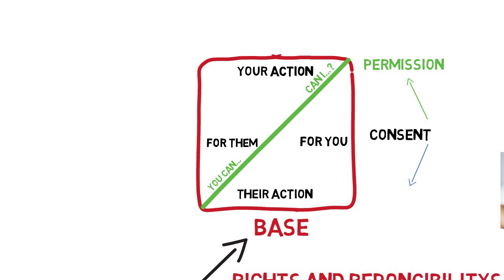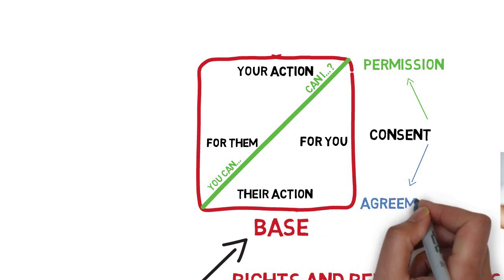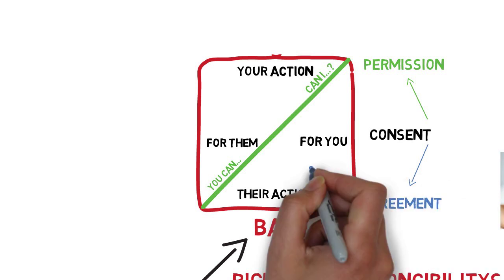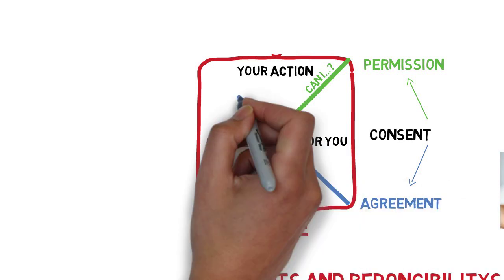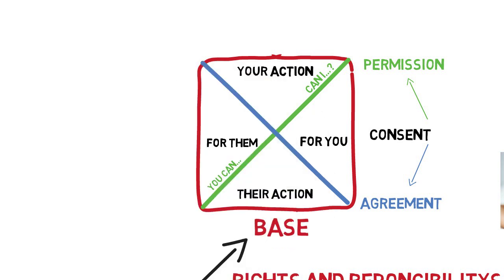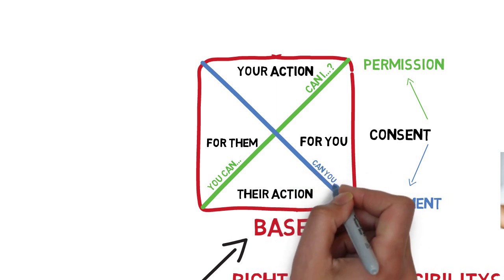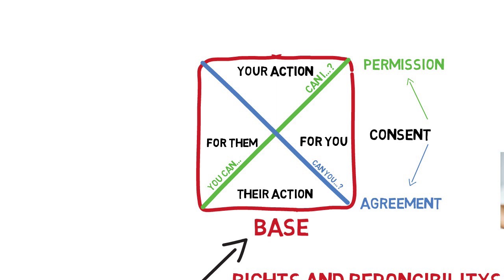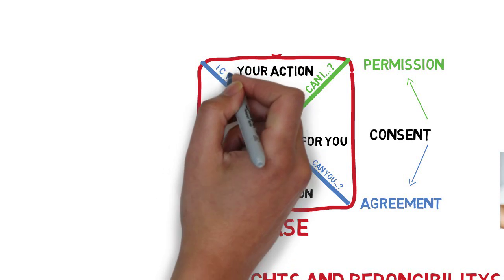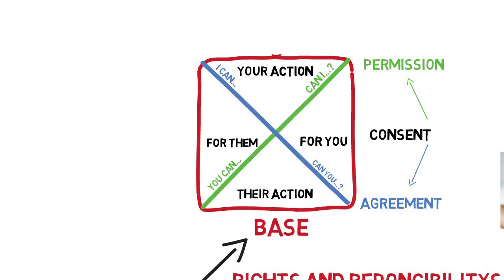Another example of consent is creating an agreement where the person is doing something for you. You could request an action for your benefit — they agree to give you a massage in exactly the way you want. Or an agreement where your action benefits the other person — for example, you agree to do a friend's shopping.